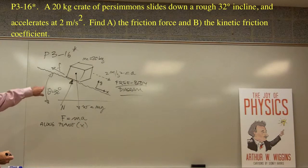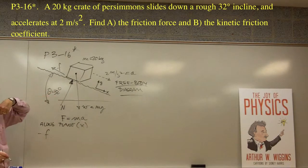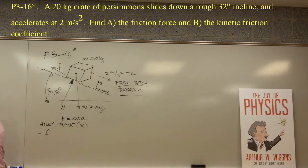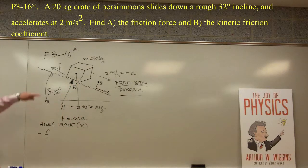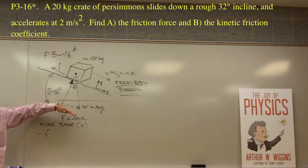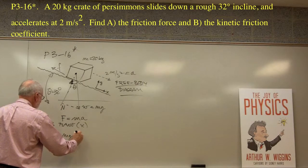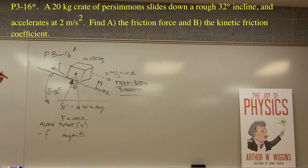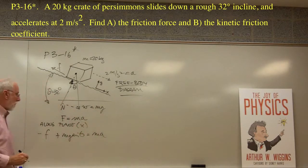In the x direction, along the plane: we have the frictional force, which is negative (minus f), and a component of the weight pulling down the plane. Since the weight is vertical, only part of it acts along the plane — that's mg sine theta, which is positive since x is down the plane. So: minus f plus mg sine theta equals ma.